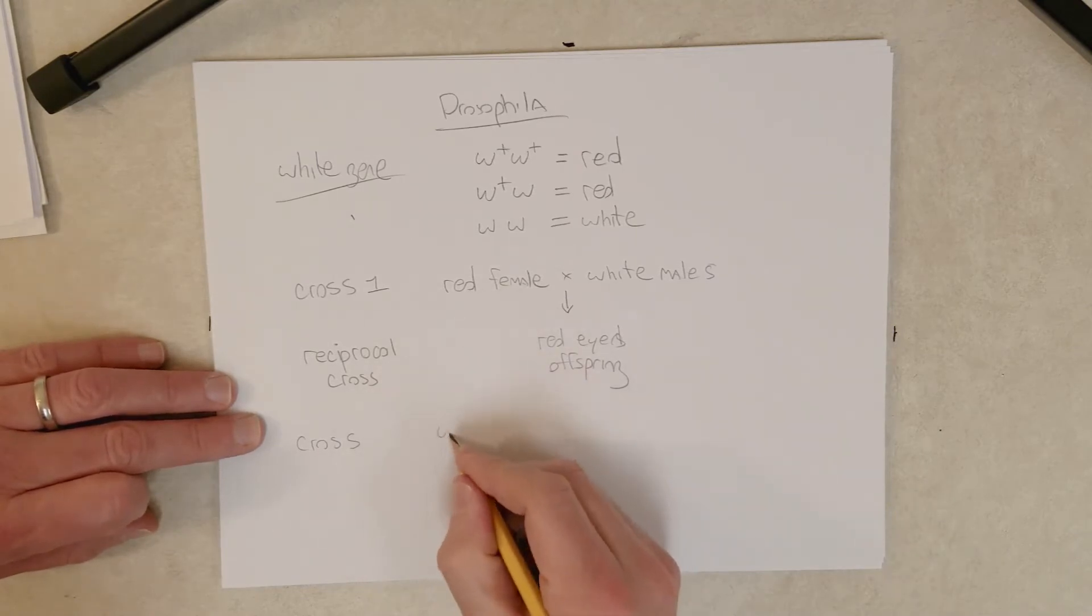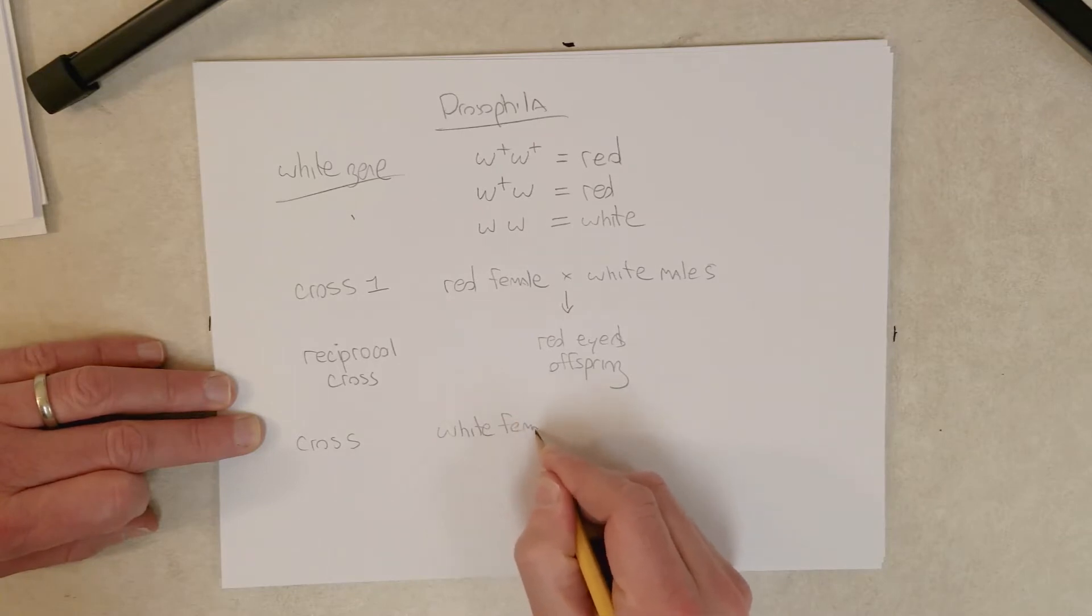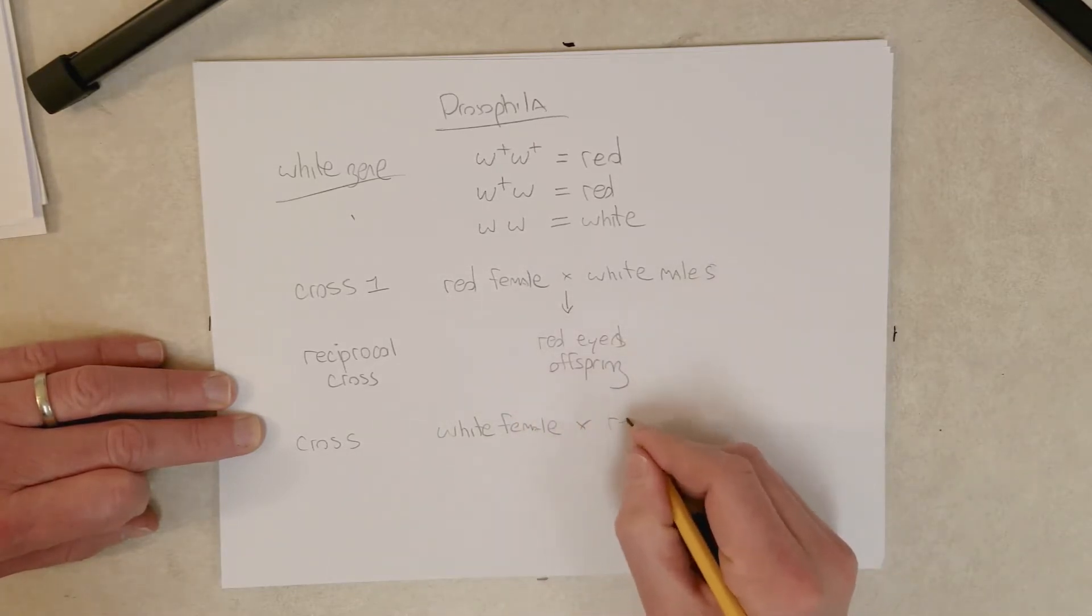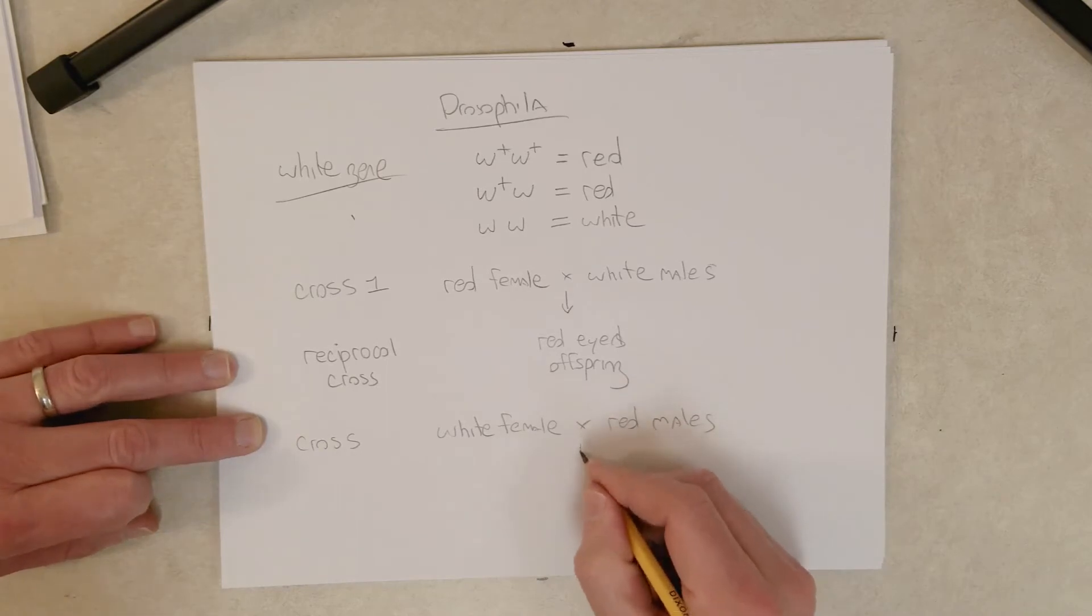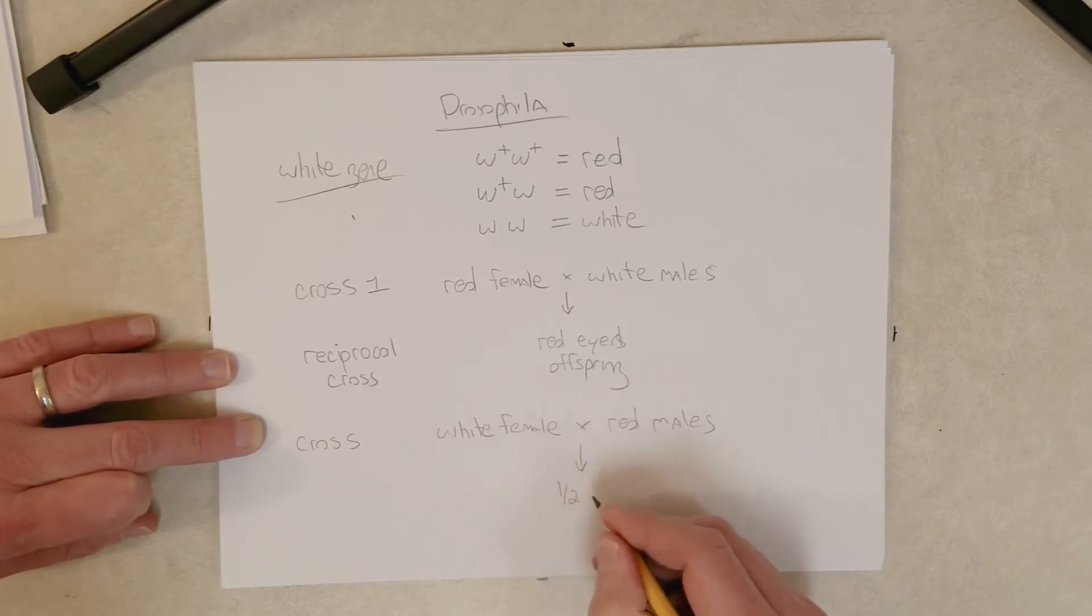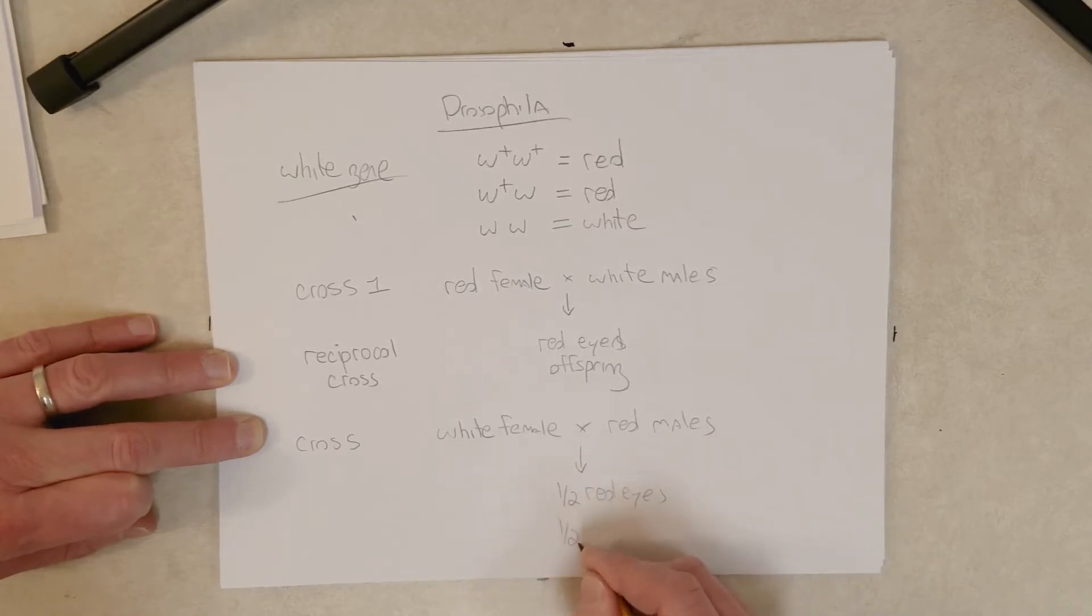In this case, we have a red female. The reciprocal cross would be a white female, a female with white eyes. Here we have white males. Down here we have red males. When he did this cross,